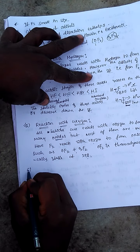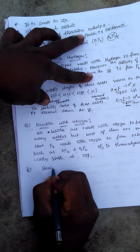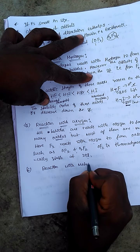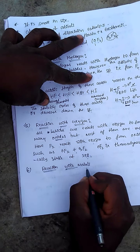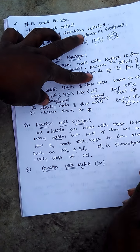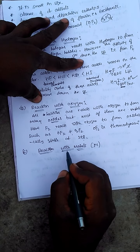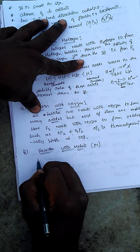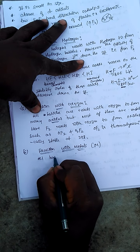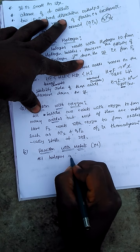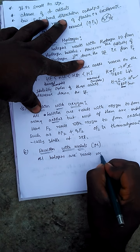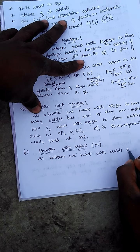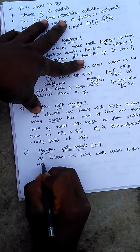The next chemical property is the reaction with metals. All halogens react with metals to form their respective metal halides.